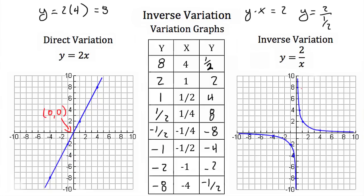Notice that when our x value is very large, the denominator gets very large and our y value gets very small. When our x value is very small, the denominator is very small and our y value gets very big — and the same happens on the negative side. Also notice that the inverse variation graph never touches or passes through the origin, and you never have an x value of 0, because that would make the denominator equal to 0 and the function would be undefined.